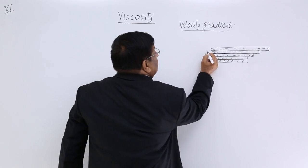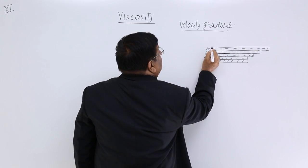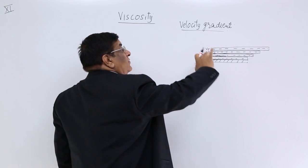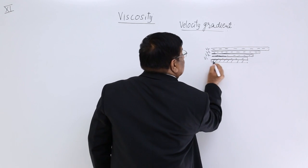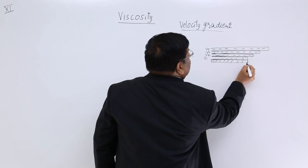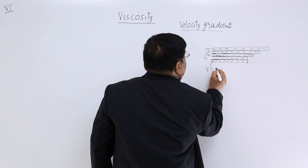Velocity V1, V2, V3, V4, V5 like that. The velocity goes on increasing, and this is surface at rest, V0.